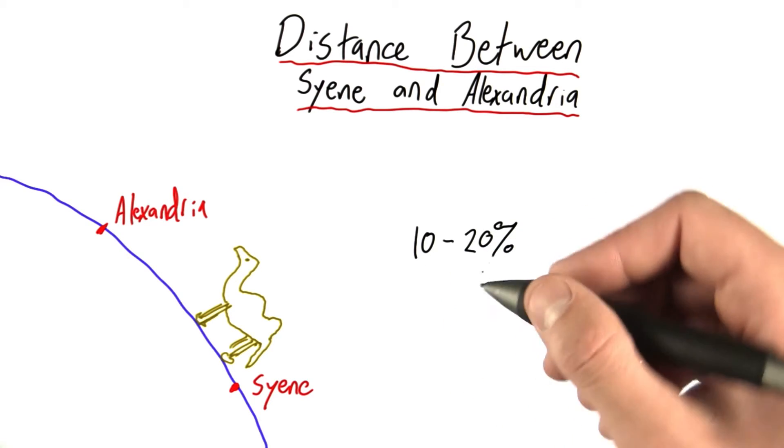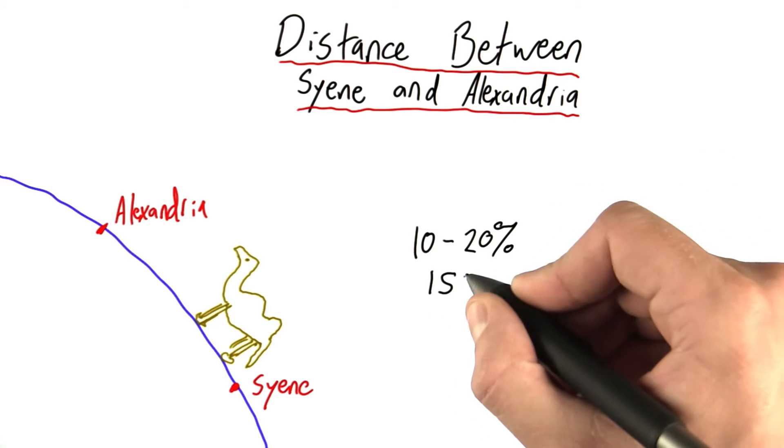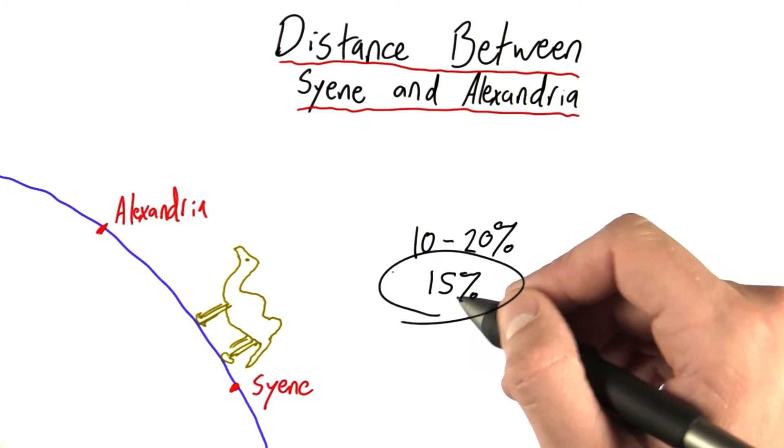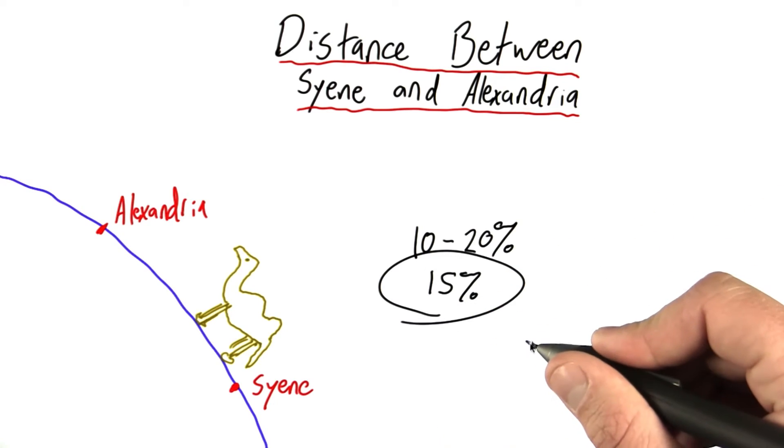An error in distance measurement of 10 to 20%, well, let's just say 15% for simplicity's sake. We need to propagate this through and determine how much this affects our circumference measurement. So, let's go back to our equation.